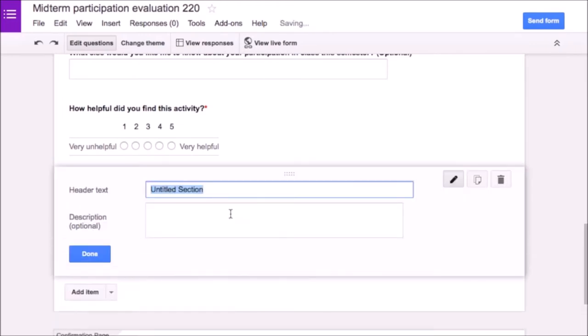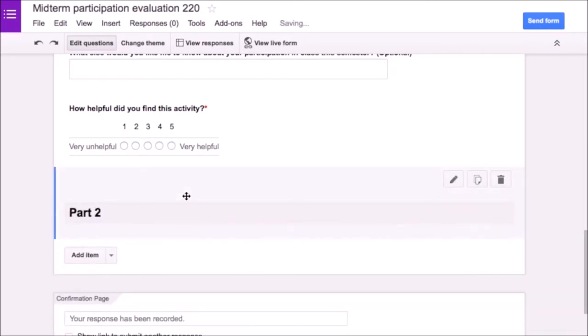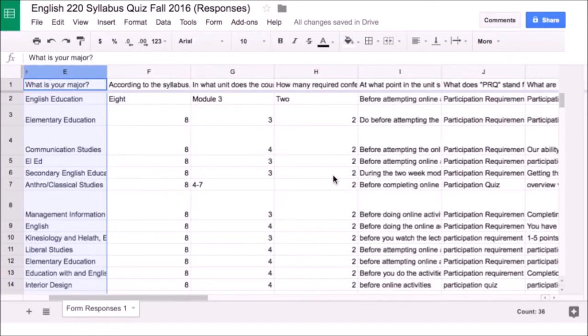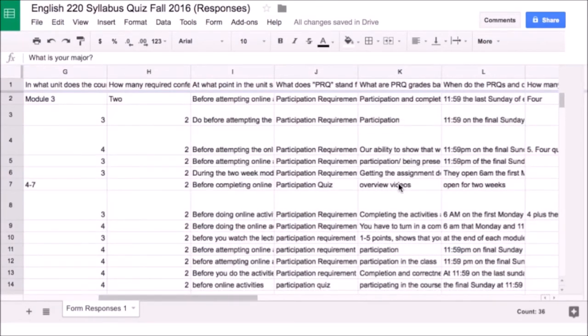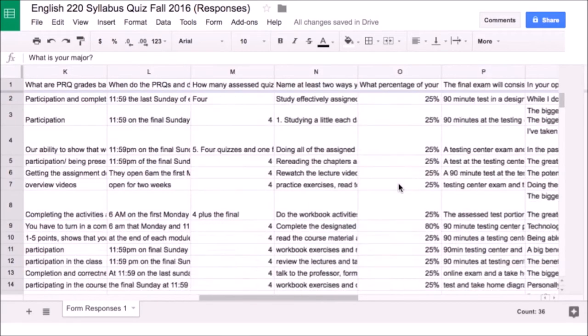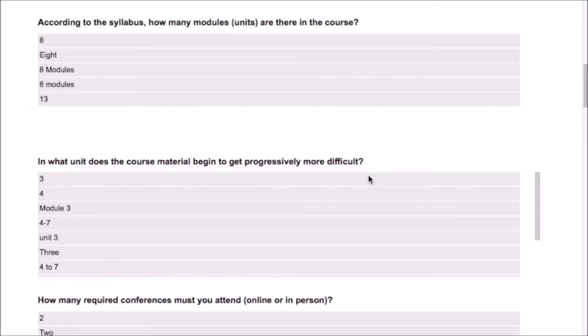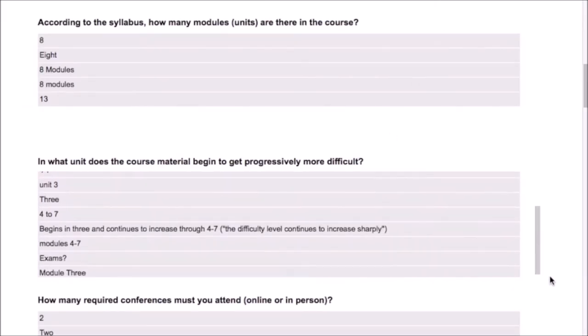There are several reasons why I find this tool helpful. One nice feature is that you can have respondents provide their contact information, but you can also make it anonymous. Additionally, Forms allows you to create a variety of questions like multiple choice questions, paragraph responses, or rating items on a scale. You can also embed a variety of media.